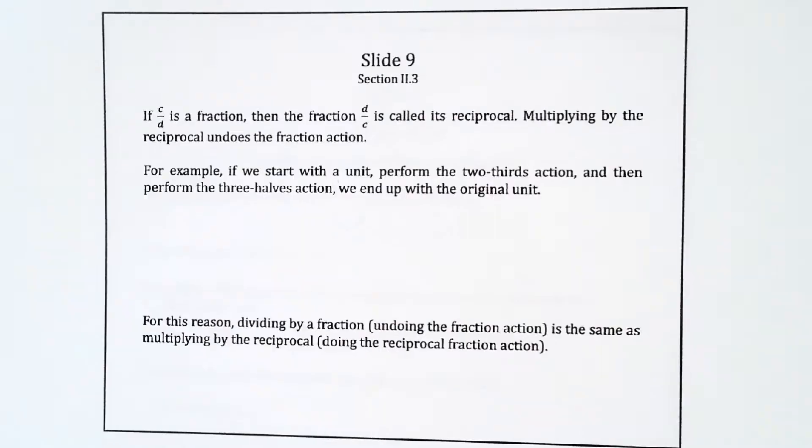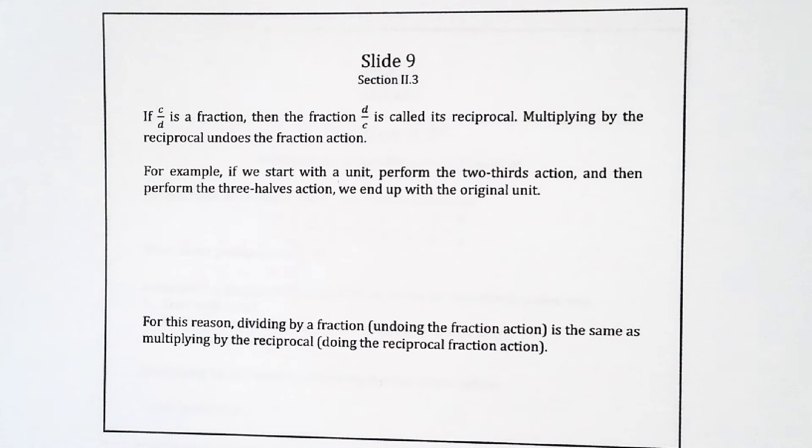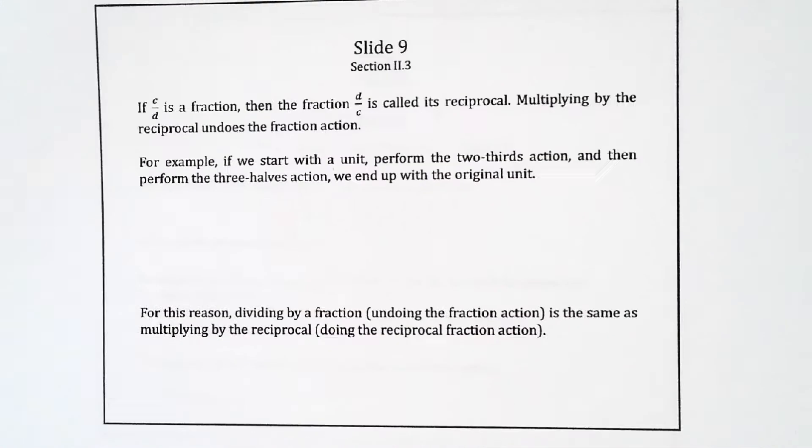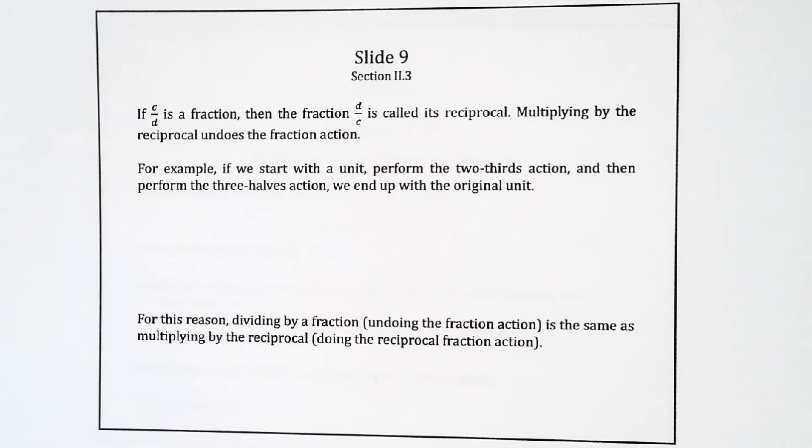Okay, so if C over D is a fraction, then the fraction D over C is called its reciprocal. So if you turn it upside down, that's the reciprocal. Multiplying by the reciprocal undoes the fraction action. So for example, suppose you start with a unit, you perform the two-thirds action, and then you perform the three-halves action. You end up with the original unit.